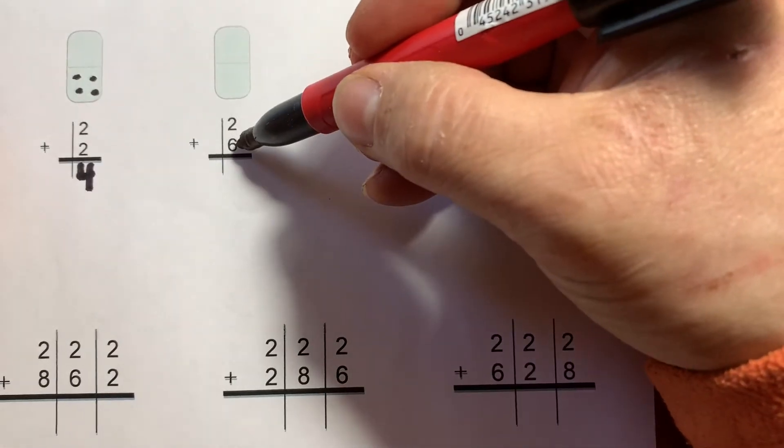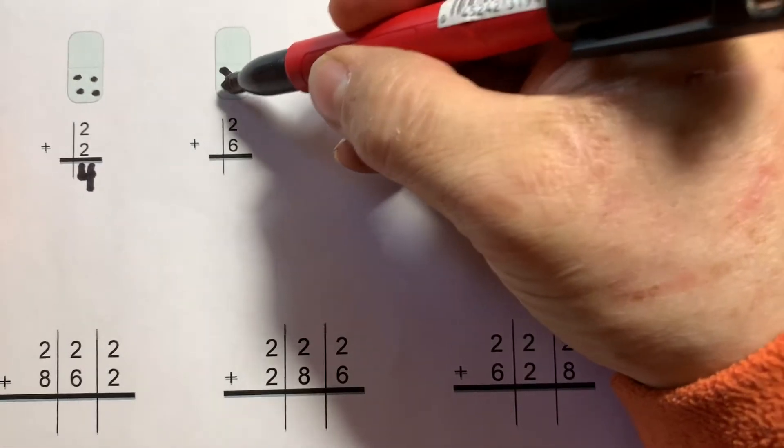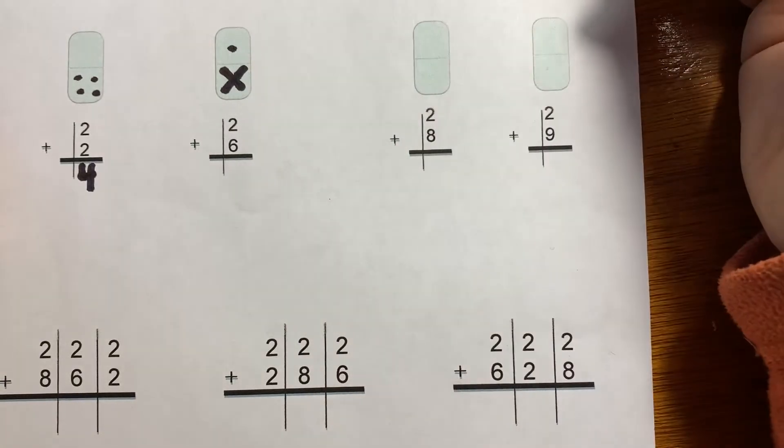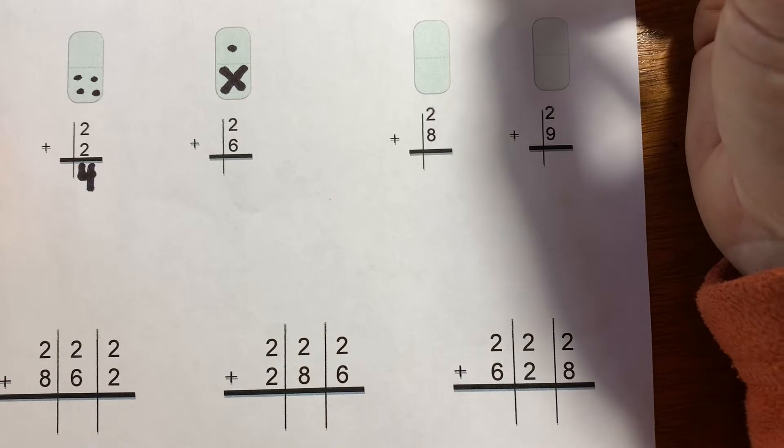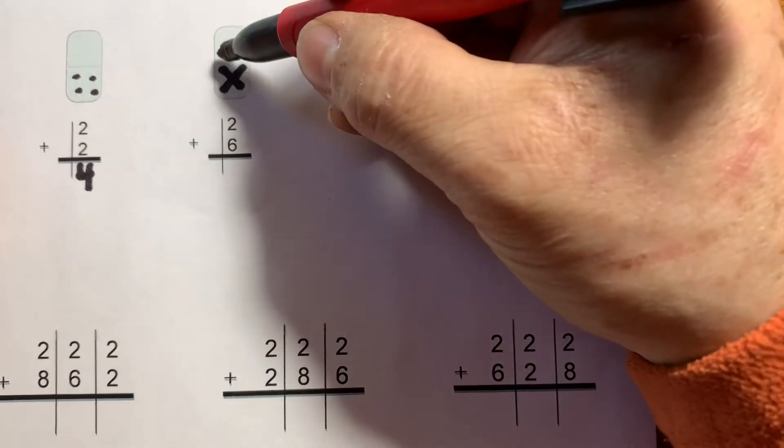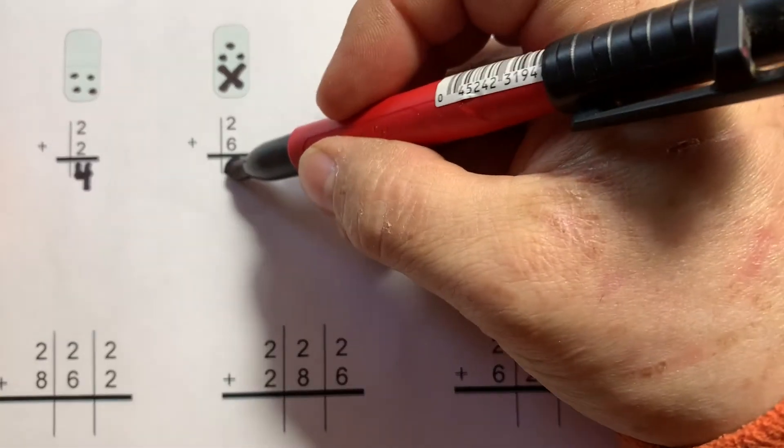Six plus two. Six is larger. That's six. As shorthand, I make an x for the five dots. And I'm going to add two. The sum is eight.